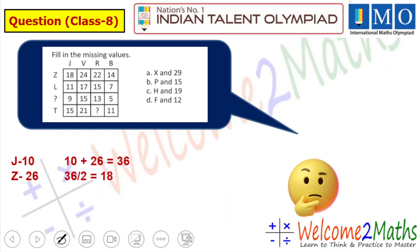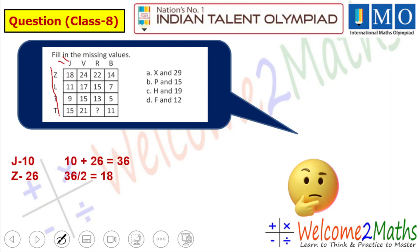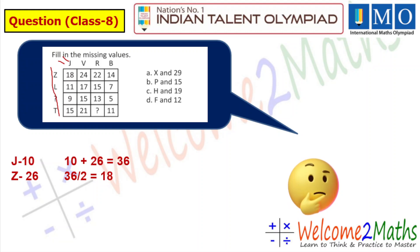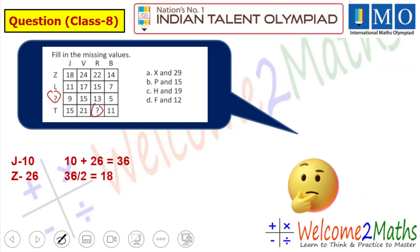That means we have to do the addition of the numerical values of letters row-wise and column-wise, and then divide the sum by 2. In this way we can find out any values. Here you can see there is a question mark that we have to find out.